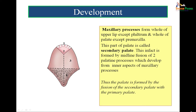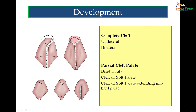The palate is formed by fusion of the secondary palate with the primary palate. The primary palate is frontonasal in origin, while the secondary palate is derived from the maxillary processes. Incomplete fusion may be unilateral or bilateral and the degree varies. A complete cleft may be unilateral or bilateral. Partial cleft palate may manifest as a bifid uvula, a soft palate cleft, or a large cleft extending into the hard palate. Understanding the developmental basis of cleft palate is required for effective treatment and understanding the degree of the defect.